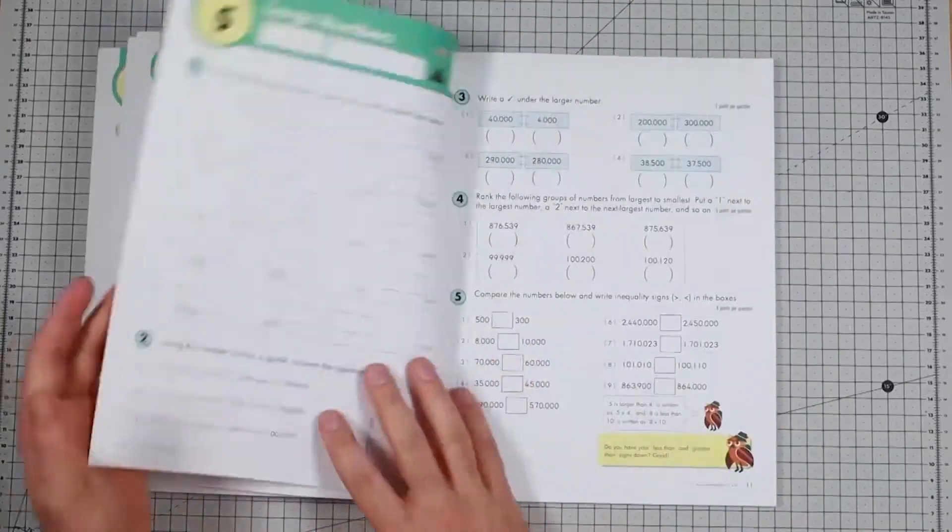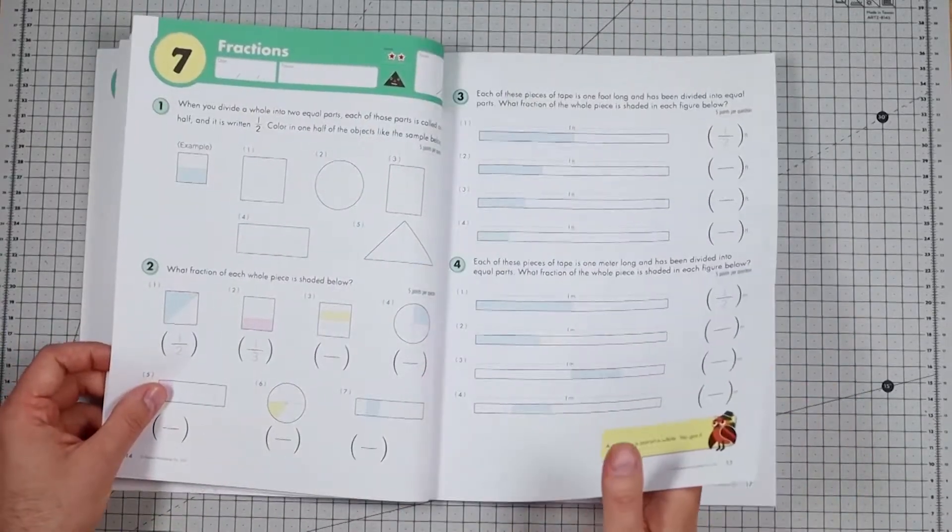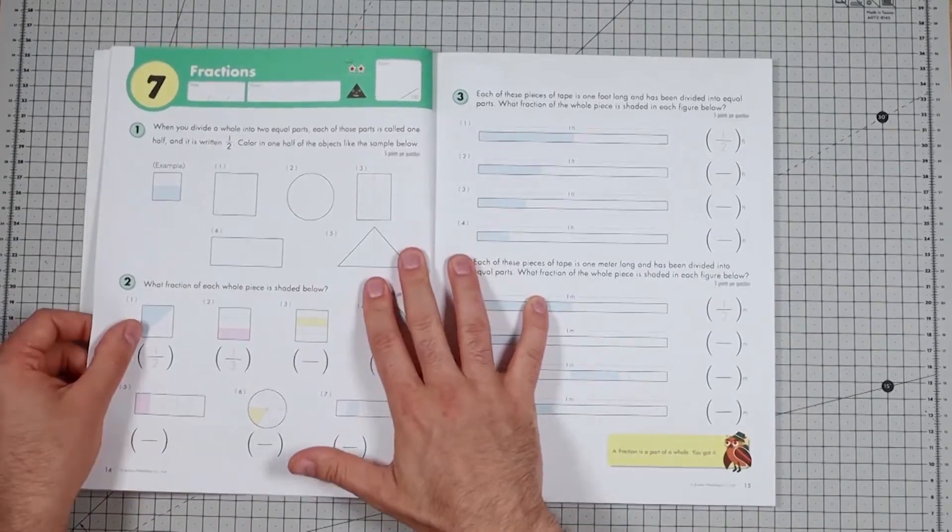And then it just repeats those until you're sick of it, like the Kumon books do, and kids will learn from these quite well.